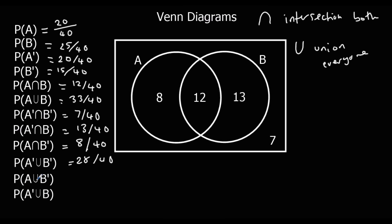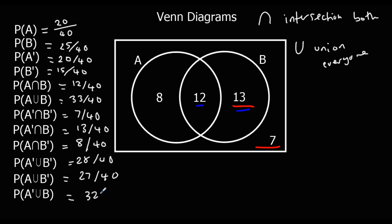The union of A and not B — A is those two sections and not B is those two sections. It's the union so it's all of them, giving 27 out of 40. The union of not A and B — not A is there, B is there — it's a union so all added up: 32 out of 40.